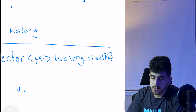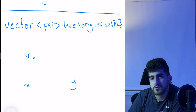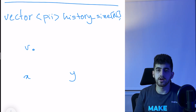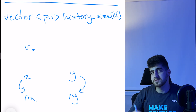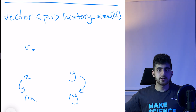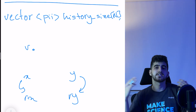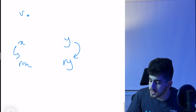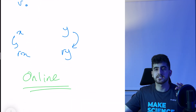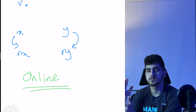To answer a query at time t for vertices X and Y, we binary search in history[X] and history[Y] to find their roots at time t, then binary search in history_size to find the component sizes at that time. This solution is online — once a query arrives it can be answered immediately without waiting for future queries, which is useful if the problem requires online processing.